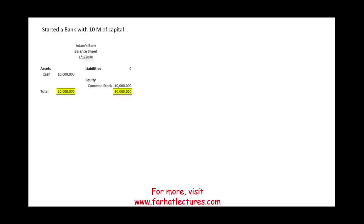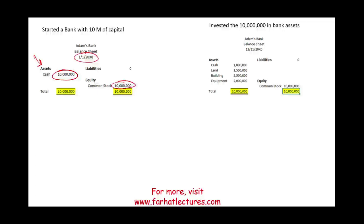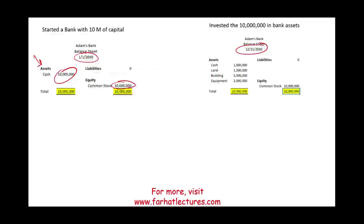Let's assume I wanted to start a bank with 10 million dollars of capital. I'm going to call this bank Adams Bank. On my balance sheet I invested 10 million — the bank will have 10 million in cash, common stock of 10 million. Then I took this 10 million and purchased land, building, and equipment to open the bank. I still have 10 million in assets and 10 million in equity. The bank existed and now has land, building, and equipment, so they can open their doors for business.